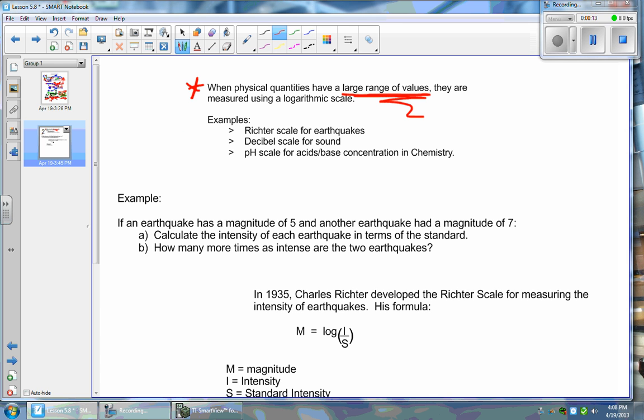Case in point, the Richter scale when talking about the intensity of an earthquake. Sound decibels - listen to a stereo and then stand in front of a jet, well don't, but you know what I mean. You're going to see a definite increase in sound there. And our favorite, the pH scale for acid-base concentration in chemistry.